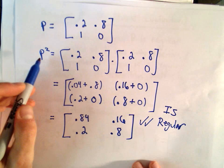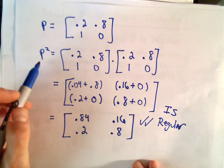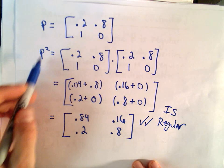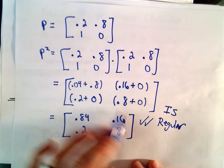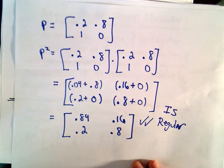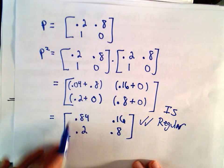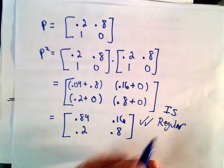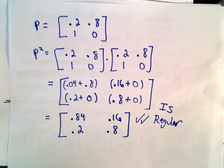It could happen that you have to compute P to the third, P to the fourth, P to the fifth — quite a few powers — before you actually get entries that are all positive. But as long as at some point they do turn all positive, then we say yes, that is a regular matrix. So it turns out the first and third matrices were regular, and the second one was not.